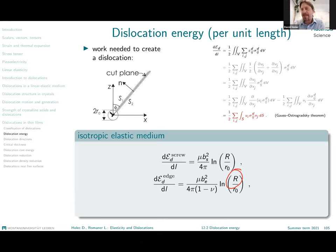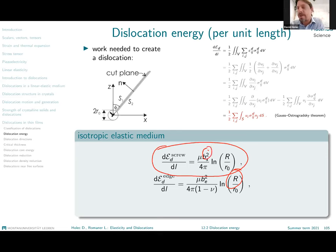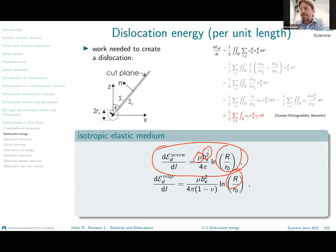When we have a screw dislocation, the formula looks very similar. Now the dependence is on the screw component of the Burgers vector. We have again the shear modulus, and in this case we do not have any Poisson's ratio in the formula, followed again by the logarithmic term.